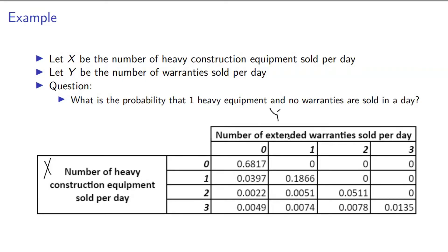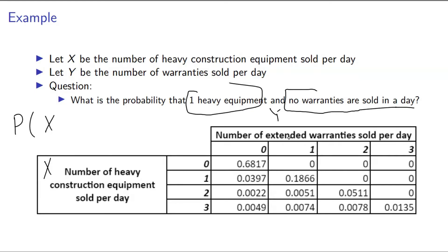The random variable Y is the number of extended warranties sold per day. The question is: what is the probability that one heavy equipment and no warranties are sold in a day? That is P(X=1, Y=0). Reading from the table, where the number of construction equipment is one and the number of extended warranties sold is zero, that joint probability is 0.0397.